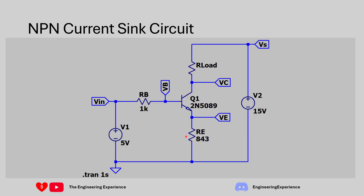The final circuit on screen shows the 1 kilohm base resistor and the 843 ohm emitter resistor RE. The 843 ohm value is much larger than the transistor's internal emitter resistance, which is important for performance. The 15 volt supply drives the load and the 5 volt supply biases the base. That completes the design of the NPN current sink circuit.